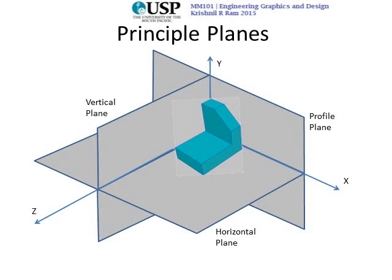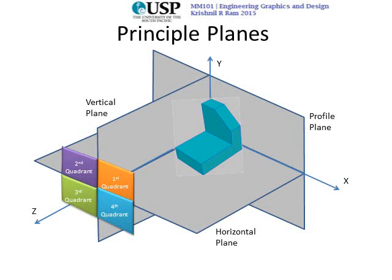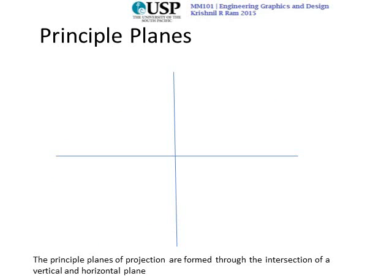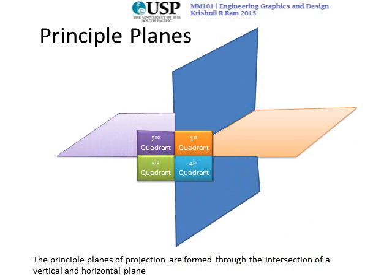Once the horizontal and vertical planes cross each other, the space is divided into four portions: the first quadrant, second quadrant, third quadrant, and fourth quadrant. This is very important. These four quadrants are formed when you pass a horizontal plane and intersect it with the vertical plane — basically, space is divided into four portions.